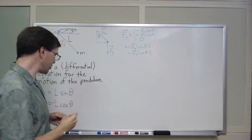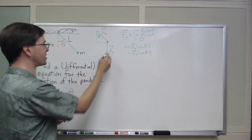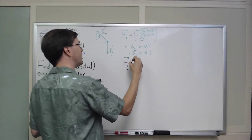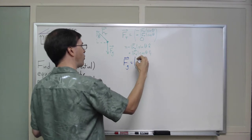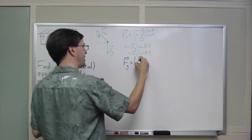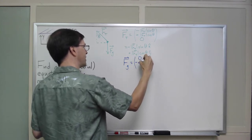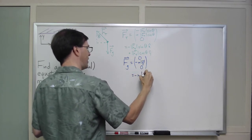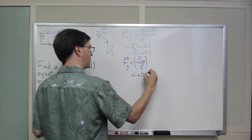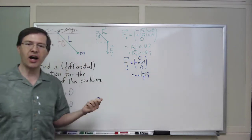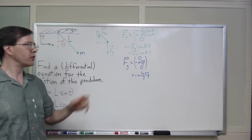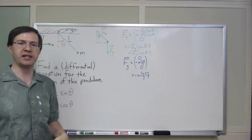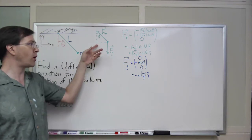I can also write down the gravitational force in components — that's much easier. The gravitational force in three-component form is (0, -mg, 0), or in component notation: minus mg y-hat. The whole point of a free body diagram is to be able to write your forces in components.